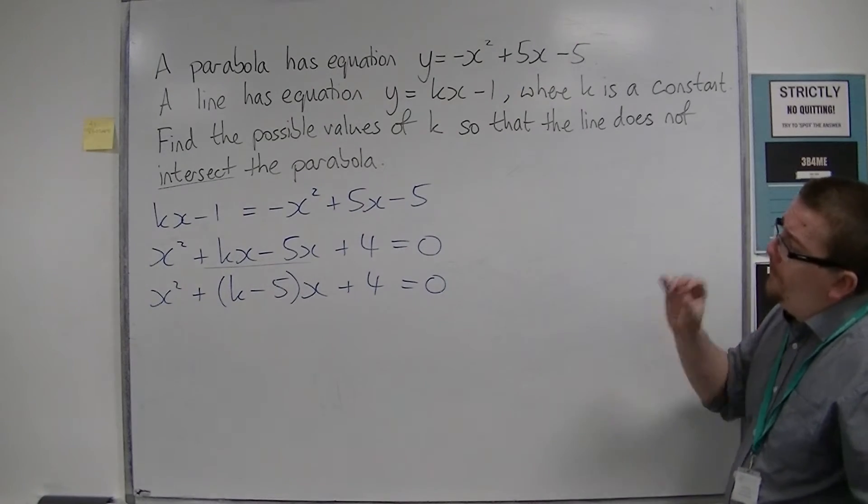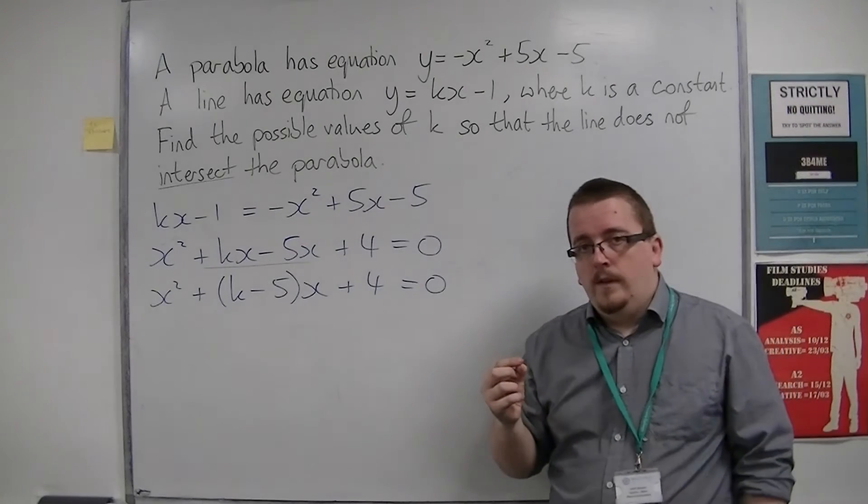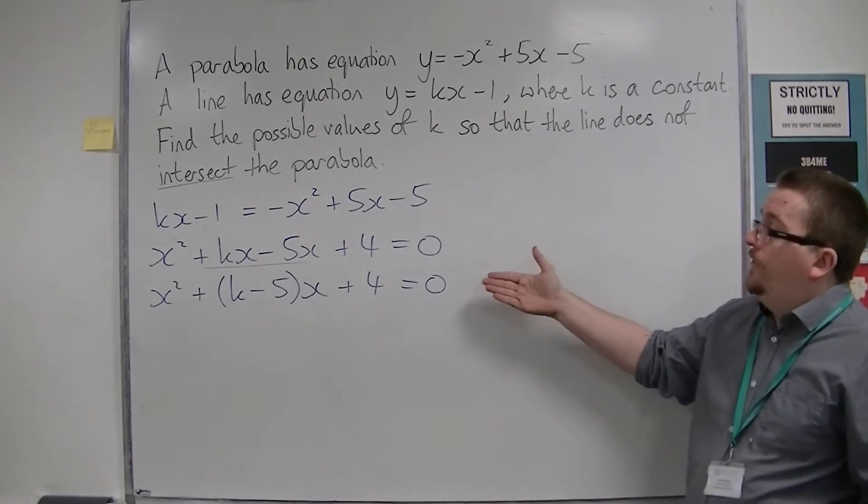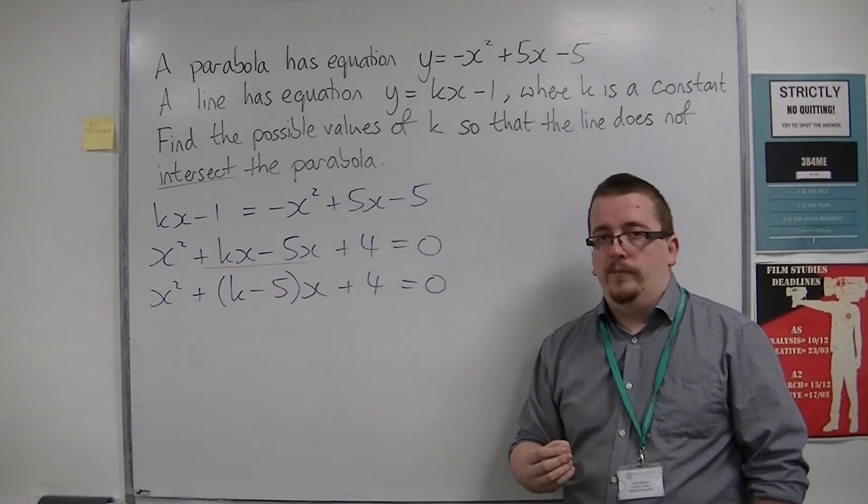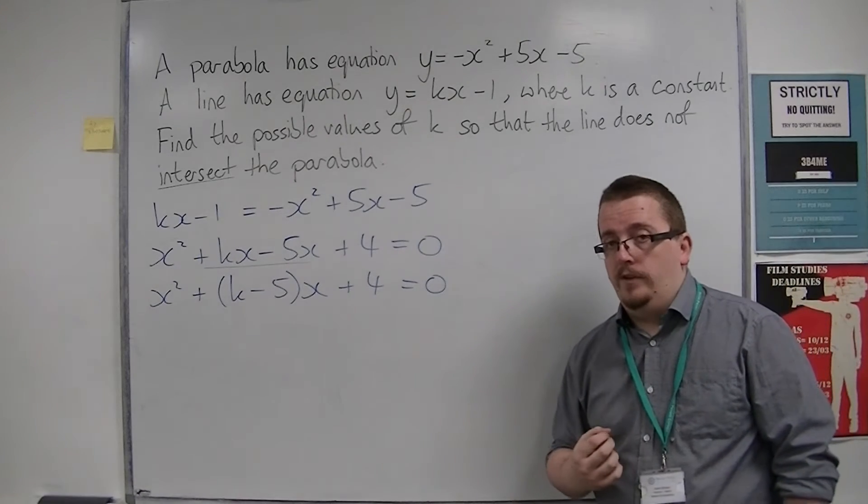So if we want to find the possible values of k so that the line does not intersect the parabola, we can work out instead where does this equation have no real roots. Both of those two problems mean the same thing at this point.